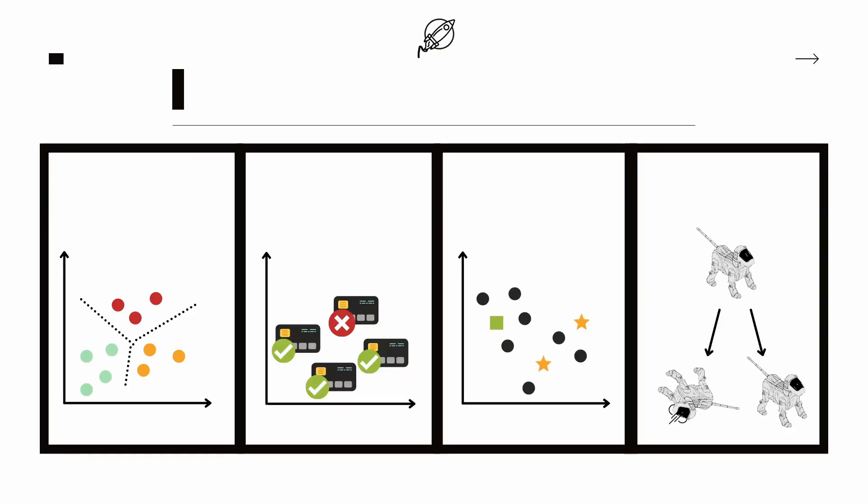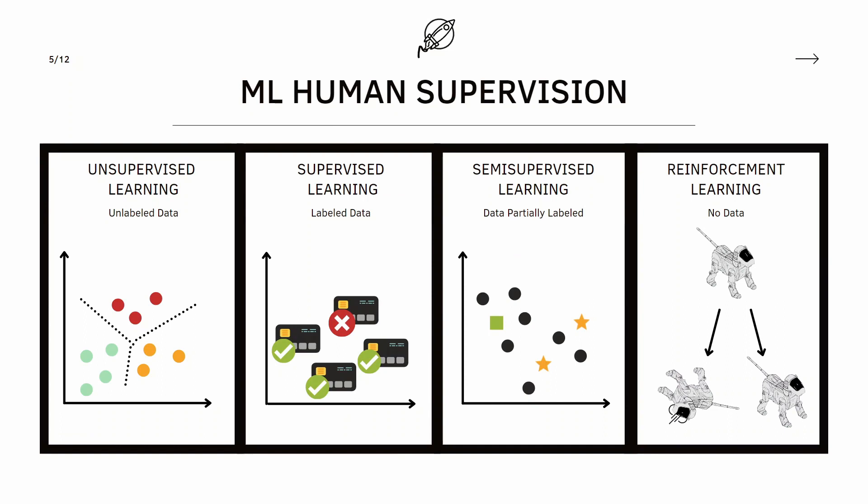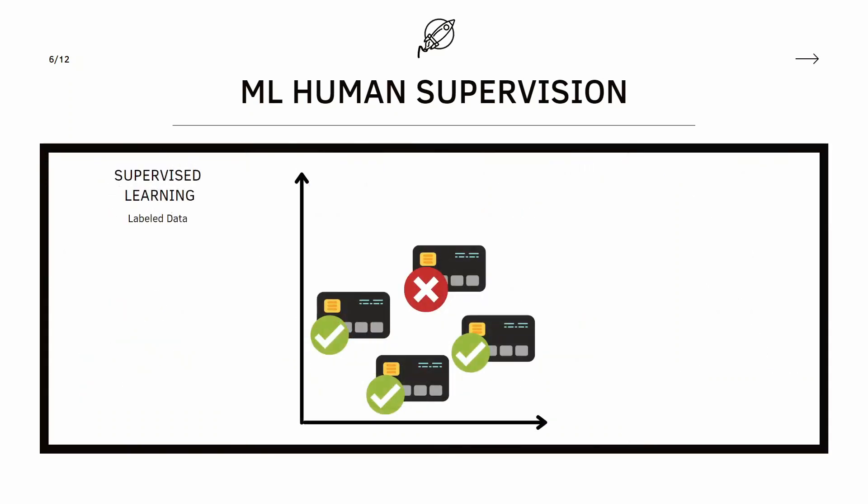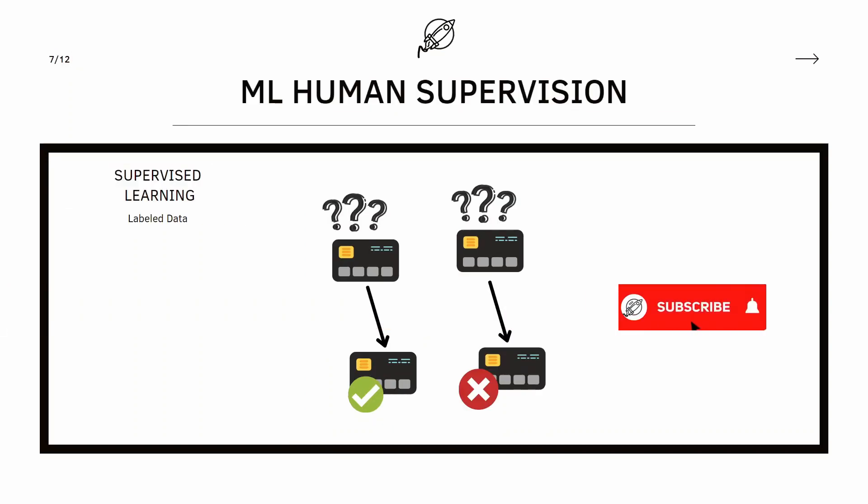Now about supervised learning. The data we have for this type of learning already has the desired solutions — these are the labels. The goal is to train the algorithm with this labeled data so it can predict new data that wasn't labeled. Take a look at this example: we have data about several credit card transactions labeled as valid or fraud. The goal is to train the algorithm with this data, and then by looking at thousands of transactions, it will learn what makes a transaction valid or fraudulent. This is a typical classification problem in supervised learning.